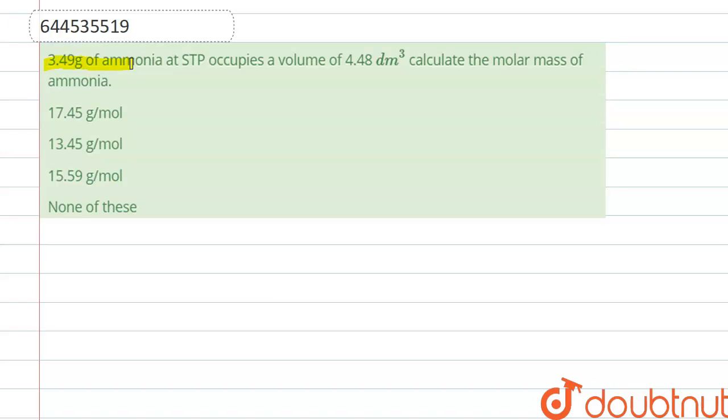3.49 gram of ammonia at STP occupies a volume of 4.48 decimeter cube. Calculate the molar mass of ammonia.